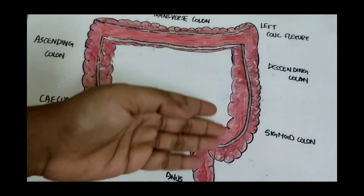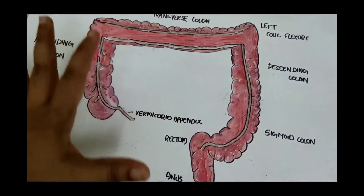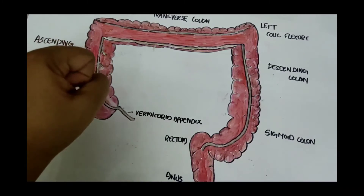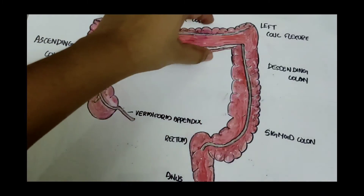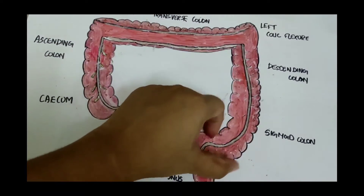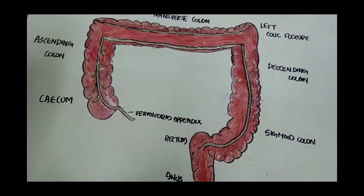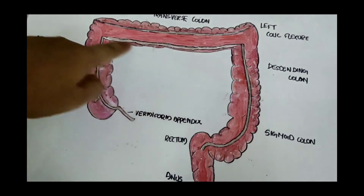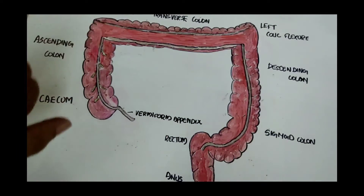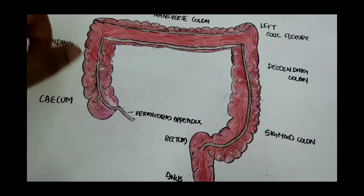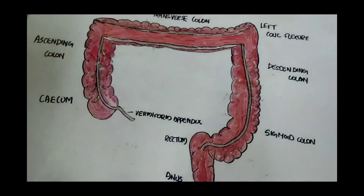The greater part of the large intestine is fixed, except at the appendix, the transverse colon, and the sigmoid colon — those three parts are mobile. The longitudinal muscle coat of the large intestine forms ribbon-like structures called taeniae coli, and there are three types: the taenia libera, taenia mesocolica, and taenia omentalis.